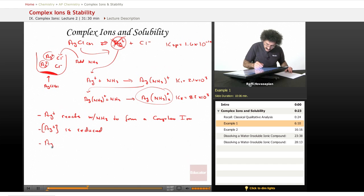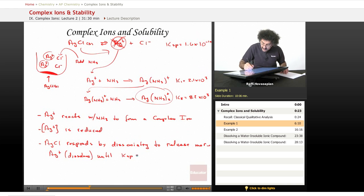As compensation for that, AgCl responds - I'm having a hard time spelling tonight - responds by dissociating to release more silver ion. In other words, it dissolves until the Ksp value of 1.6 times 10 to the negative 10 is reached again because that's what the Ksp is.